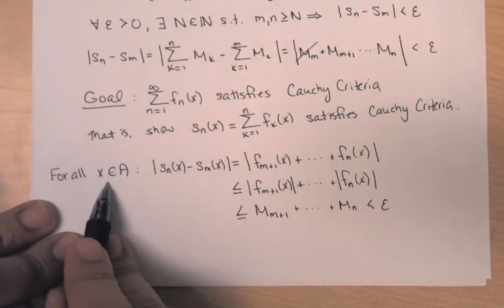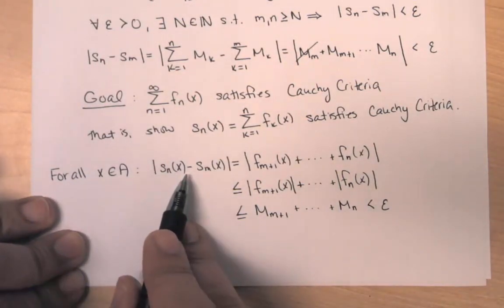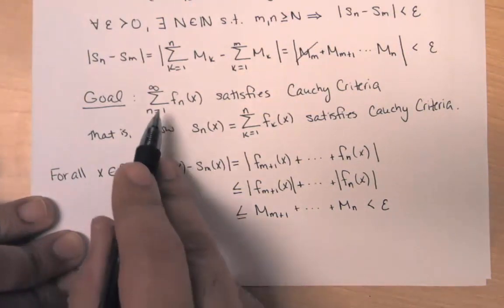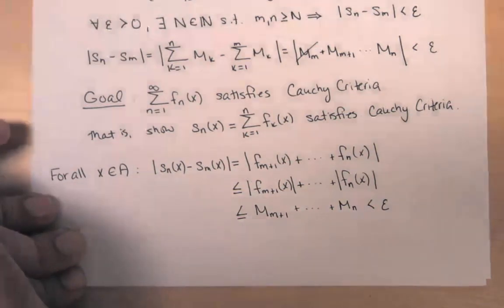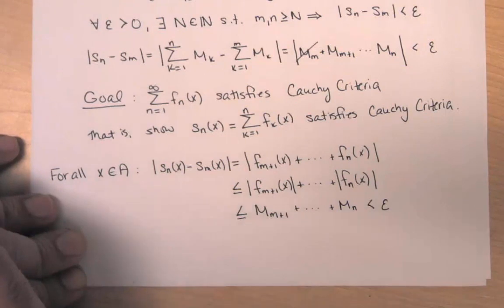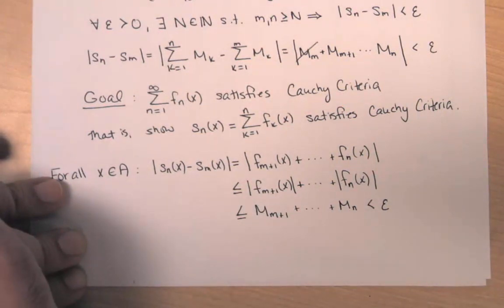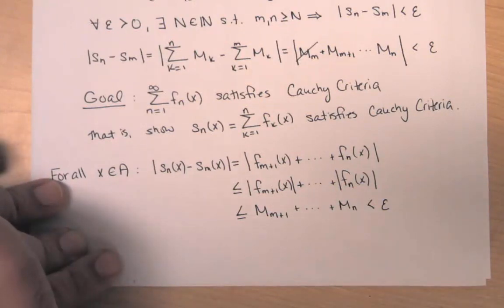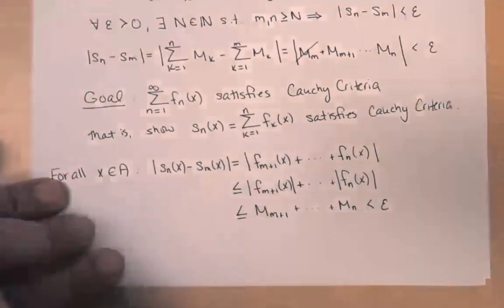Because for all x my partial sum satisfies the Cauchy criteria, my partial sum is uniformly convergent, and because my partial sum is uniformly convergent, my series is uniformly convergent. You might ask about the absolute convergence part: a series is absolutely convergent if the series of absolute values of the functions is uniformly convergent — and it is, because the difference of those partial sums is exactly the same expression, still bounded by ε.